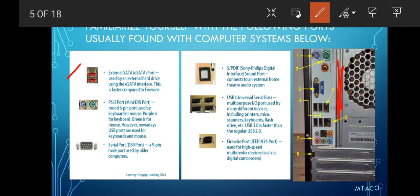The next port is your PS/2 port, also called the mini DIN port. It is a 6-pin port used by a keyboard or a mouse. The purple connector is for the keyboard and the green is for the mouse. However, the mostly used today is the USB port for mouse and keyboard.